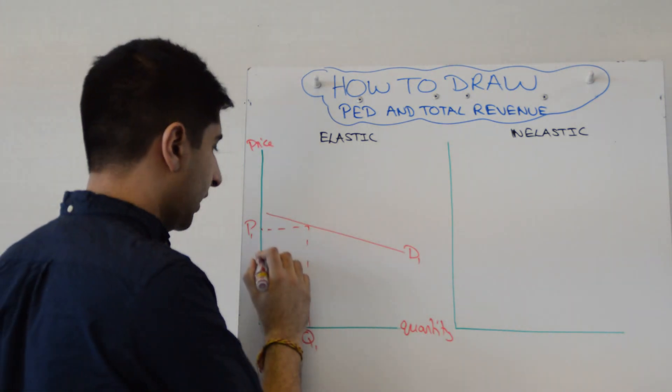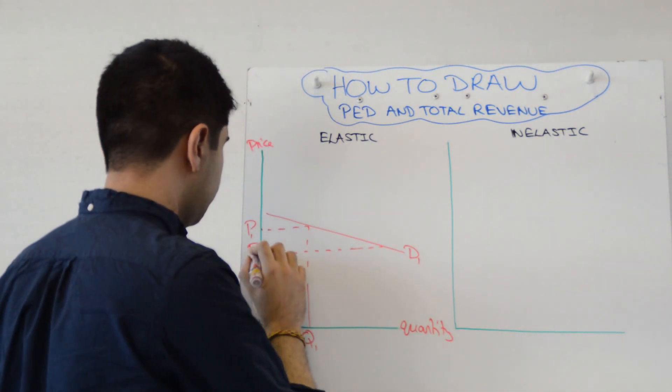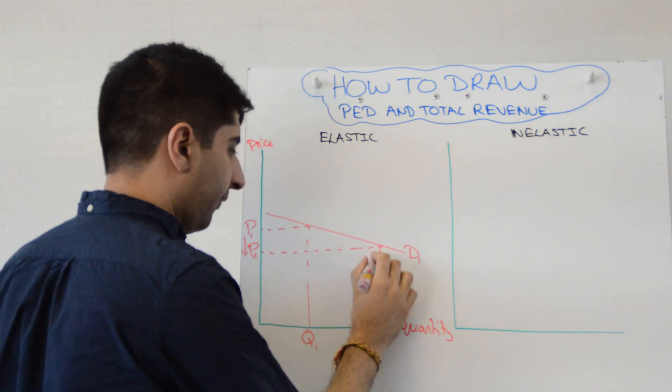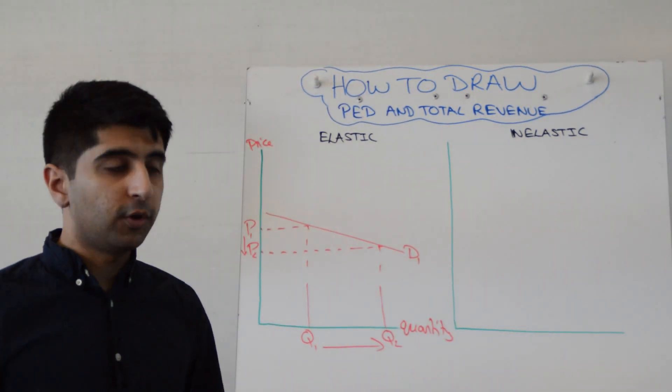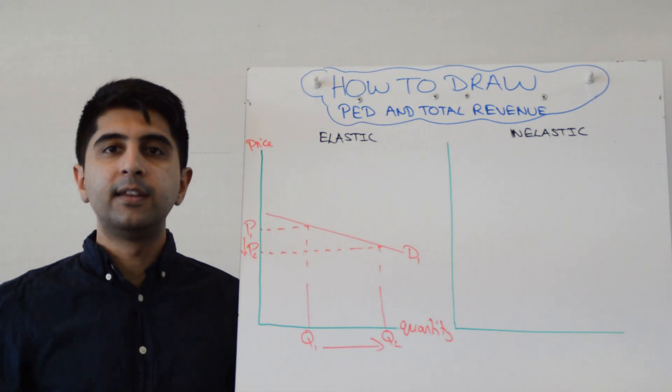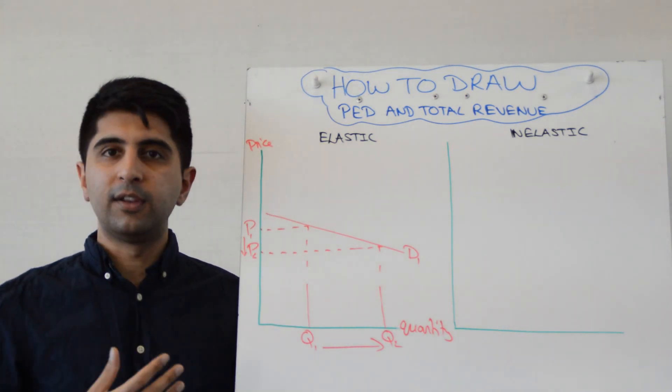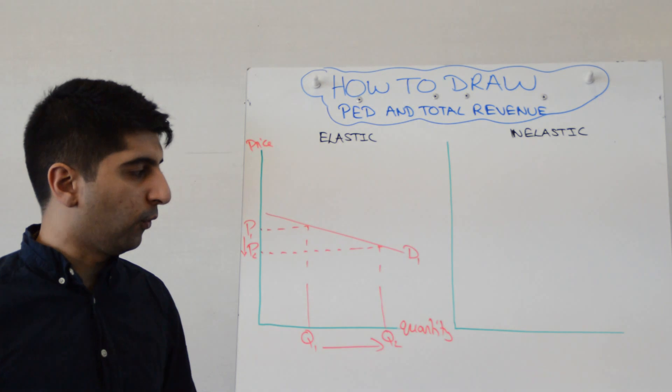So let's show that price reduction from P1 to P2, and the quantity increase from Q1 to Q2. What we've shown here is that quantity demanded is increasing proportionately more than the price decrease. That's just what price elastic demand is all about.